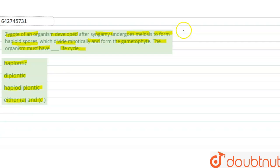So here, there are basically three types of life cycles. First is haplontic, second is diplontic, and third is haplodiplontic.